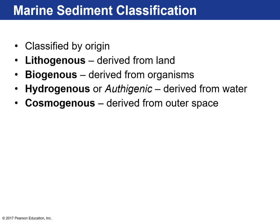Marine sediments are classified into four types based on their origin: lithogenous sediments, by far the most abundant, derived from land rocks weathering away; biogenous sediment, derived from organisms; hydrogenous sediment, derived from minerals precipitating directly out of seawater; and cosmogenous sediments, derived from outer space.